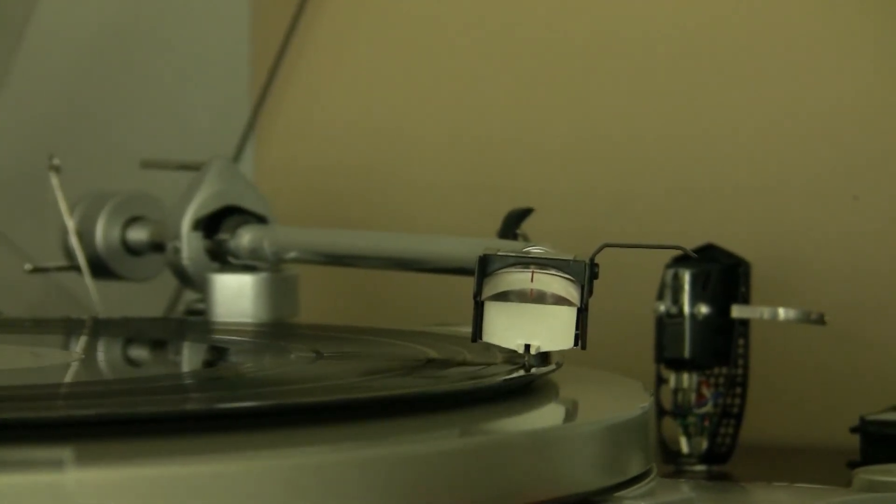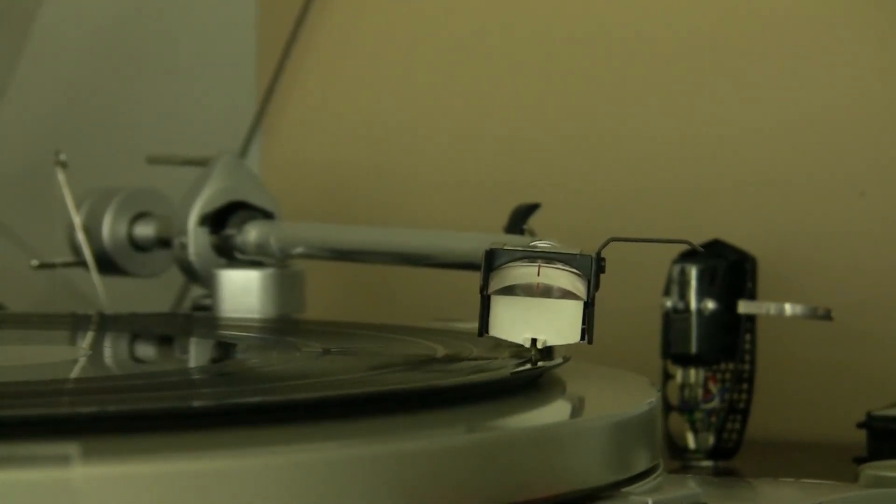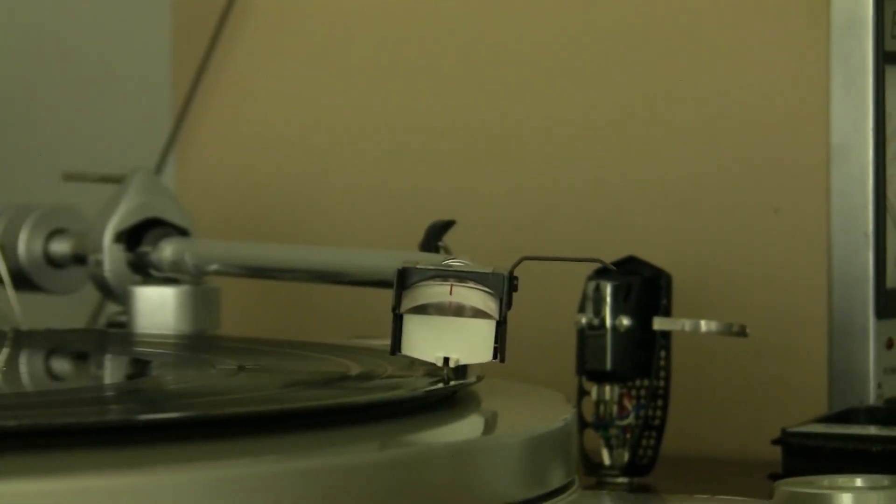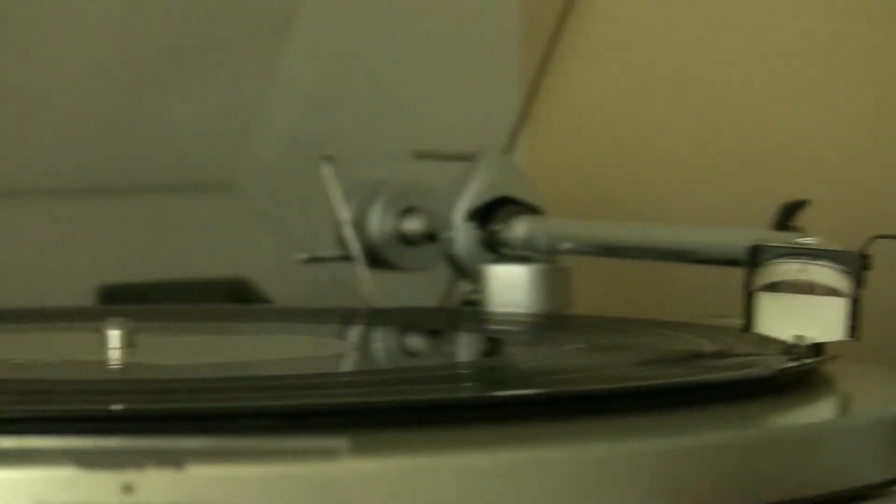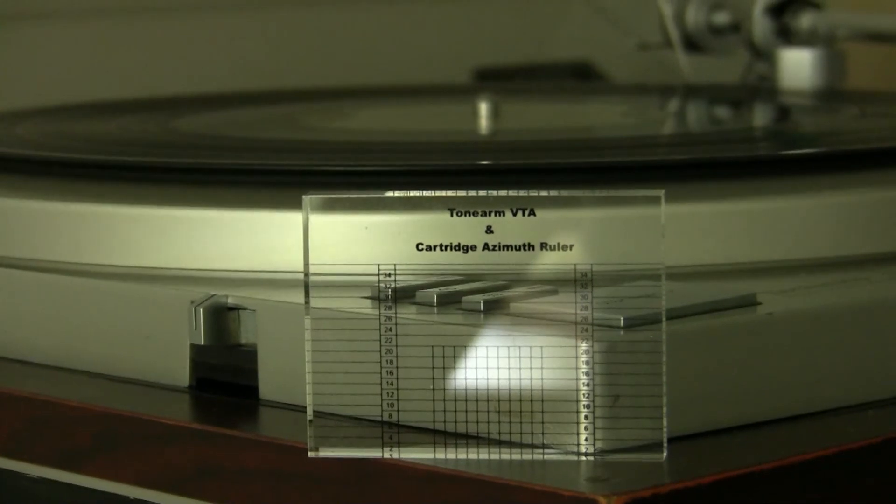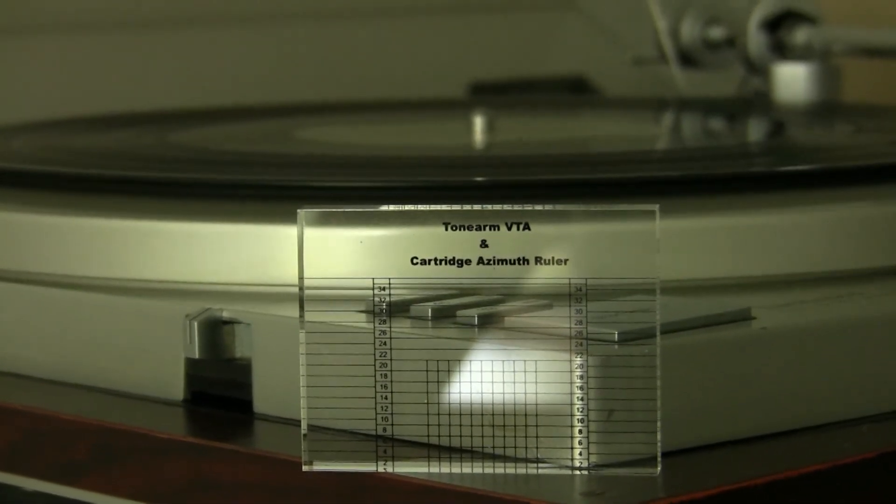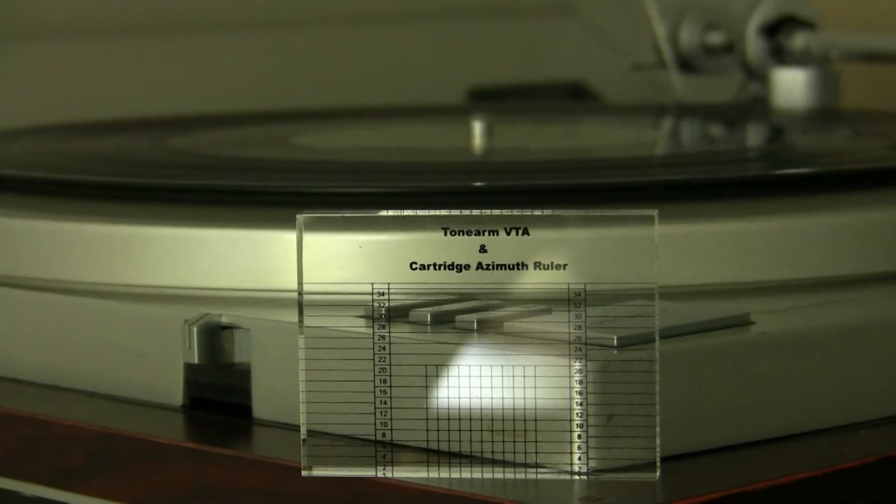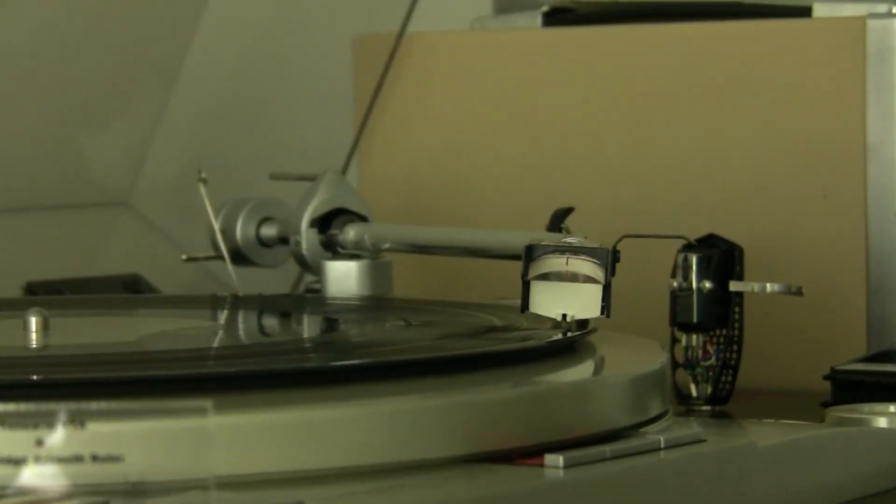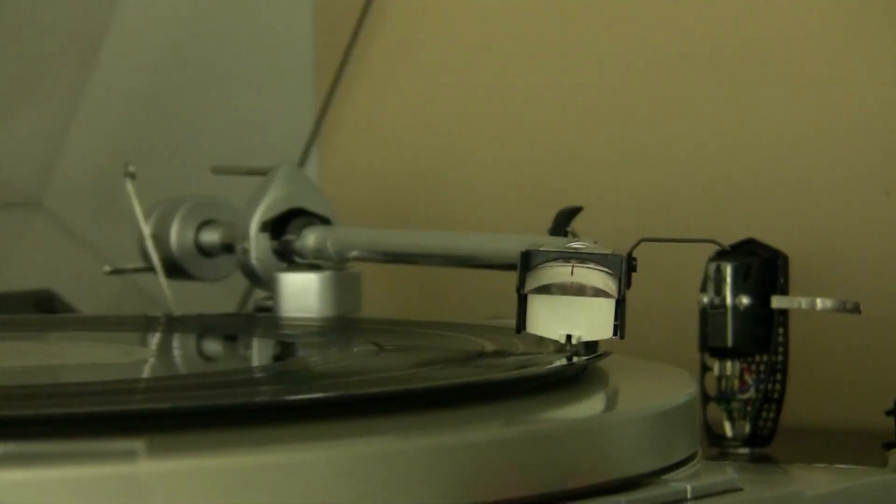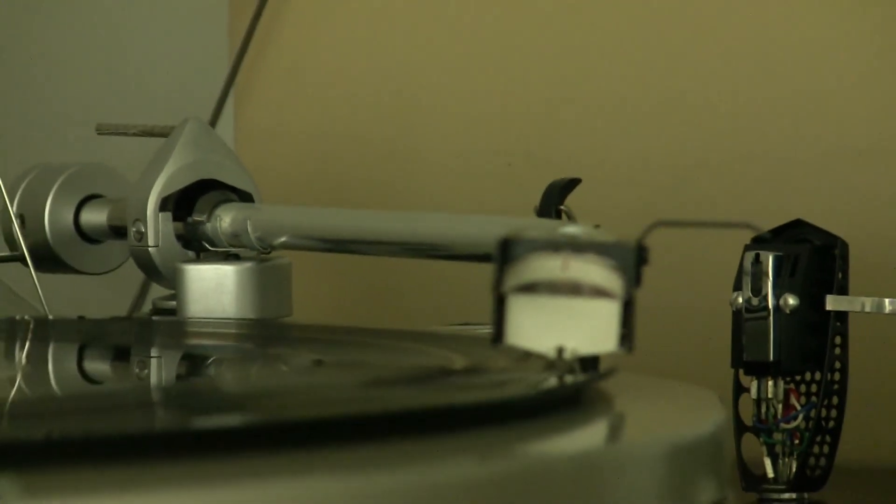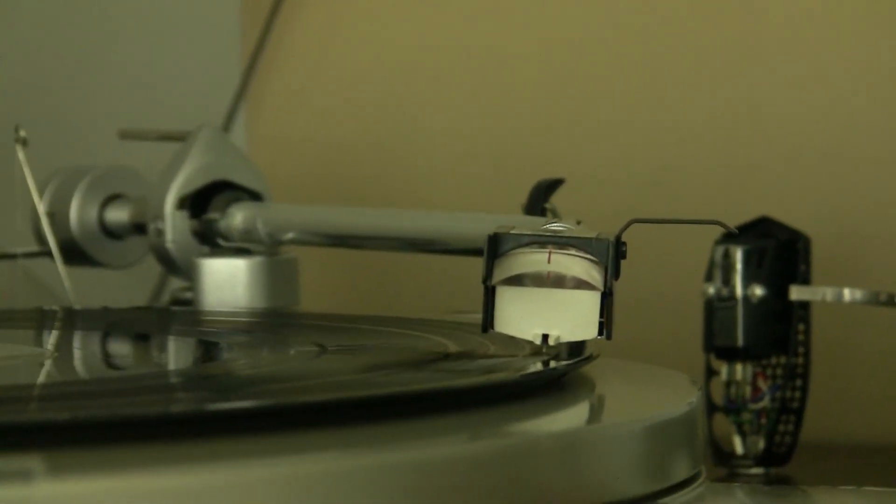As you see, there's a geometrical problem with the cartridge being parallel to the record. If you had something like this, you would always be having a channel imbalance between stereo channels. But when you have a voltmeter that shows you exactly the output, then you know your stereo image will be centered.